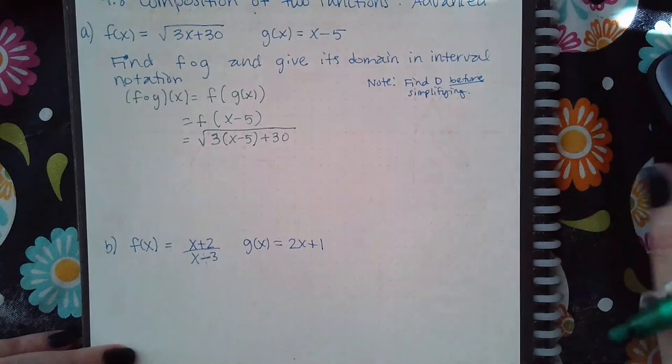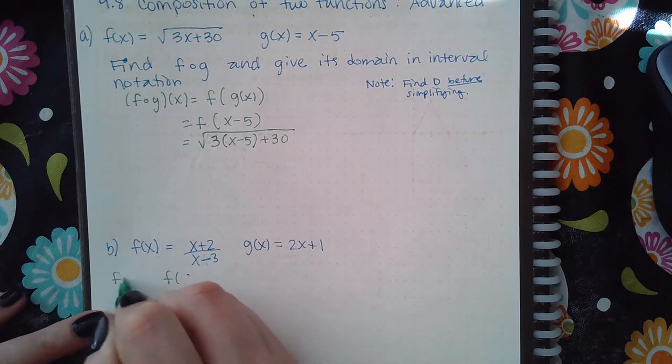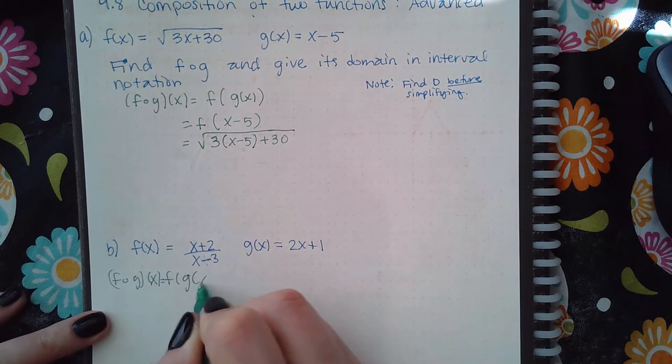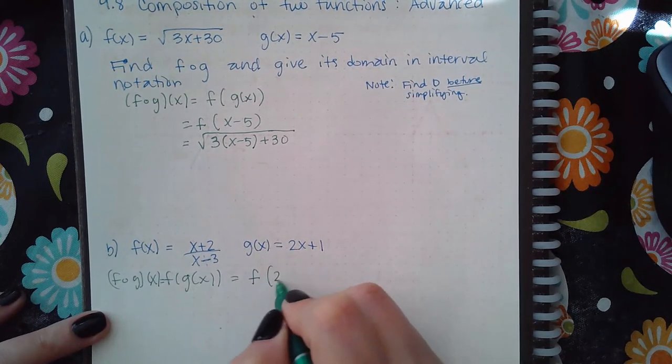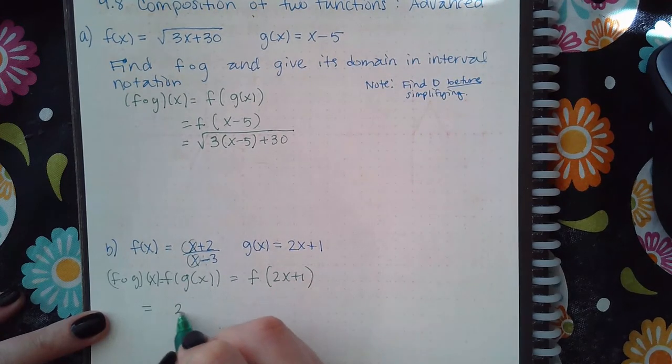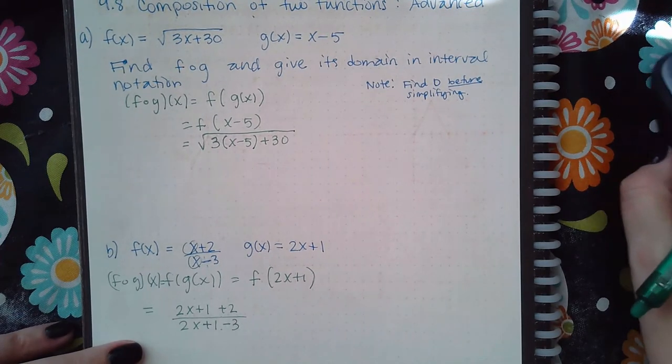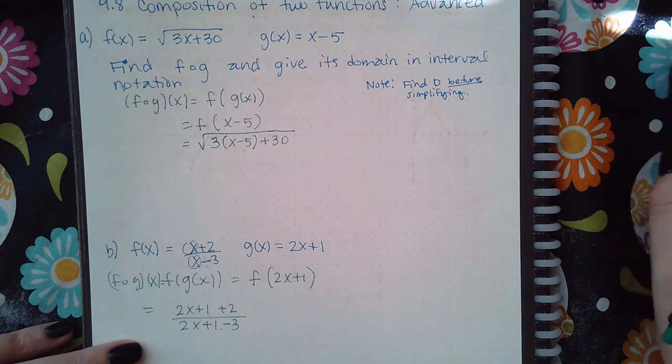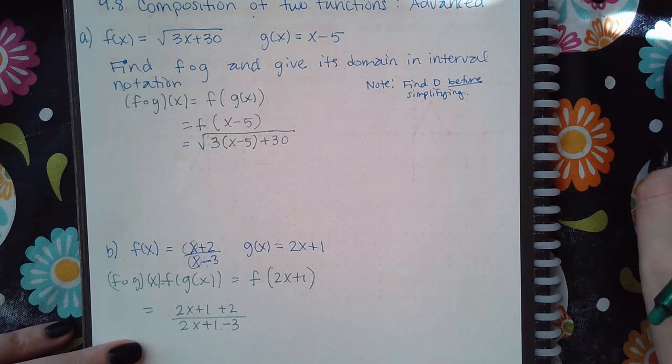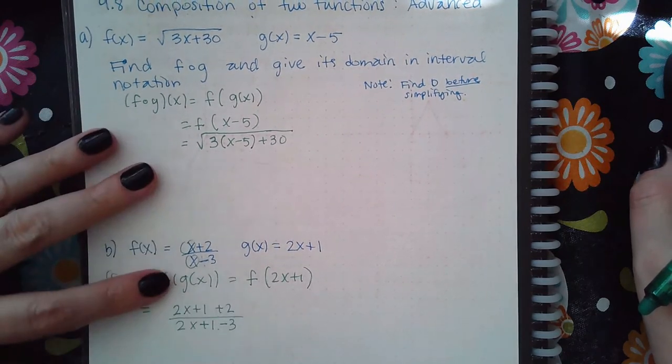And so if I do the same thing for this one here, we're going to do f of g of x. F on the outside, g of x on the inside. That means you have two places to plug in the x, so you have 2x plus 1 plus 2 and then you have 2x plus 1 minus 3. Notice in both of those cases I have not simplified anything and so we're going to leave that like that.